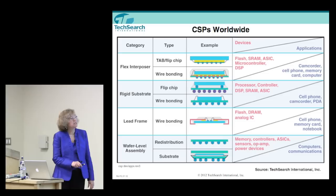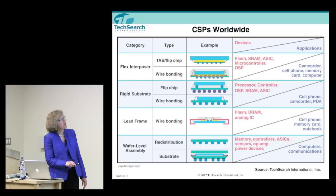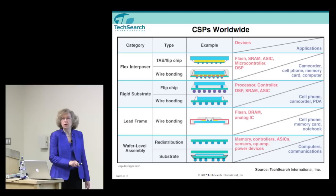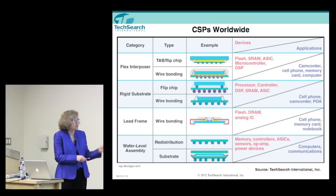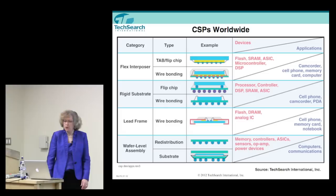The wafer level package is very low profile because there is no separate package around it — the die and the package are the same. We've basically taken a piece of silicon, put solder balls on it, and attached it directly to the board. This is obviously much thinner than anything with a substrate inside a package. If you want a really thin product you need something almost package-less, yet we still have the ability to do bump fabrication in the form of a wafer level package. This example is a lead frame type chip scale package — it has pads rather than balls, but it's still called a chip scale package.